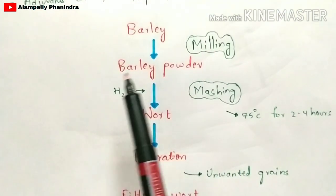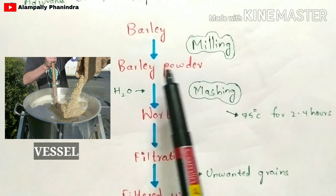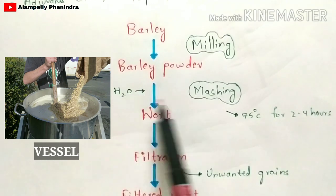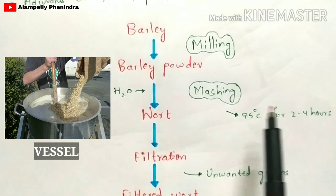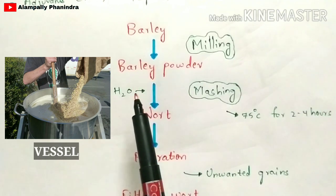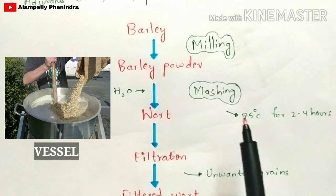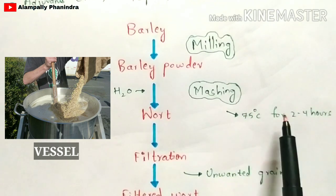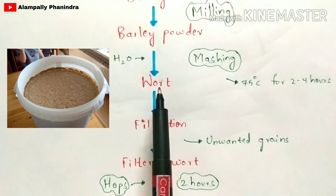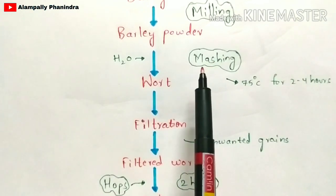After obtaining barley powder, the next step is mashing. You take a vessel, add the barley powder along with water into it, and provide heat below that vessel. The temperature maintained is 75 degrees Celsius for two to four hours, and the mixture must be stirred continuously. The product obtained — barley powder mixed with water — is called wort, and this process is called mashing.